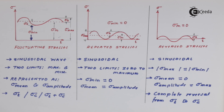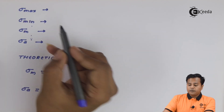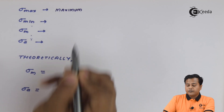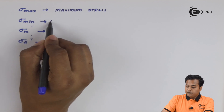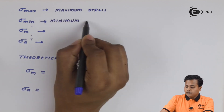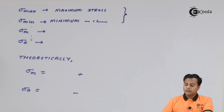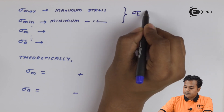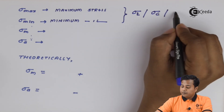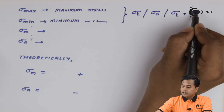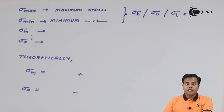To quickly revise: sigma maximum is the maximum stress, sigma minimum is the minimum stress. These two stresses can be of tensile nature, compressive nature, or a combination of tensile and compressive. Sigma m (mean stress) and sigma a (amplitude stress) are the two most prominent values for the design aspect.